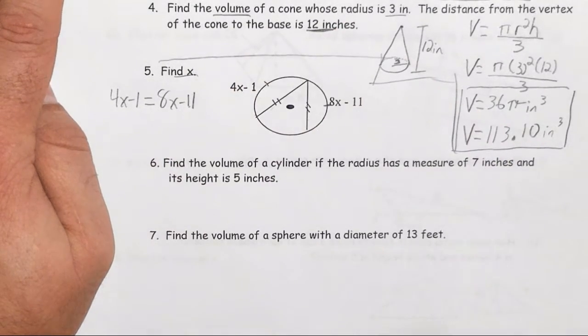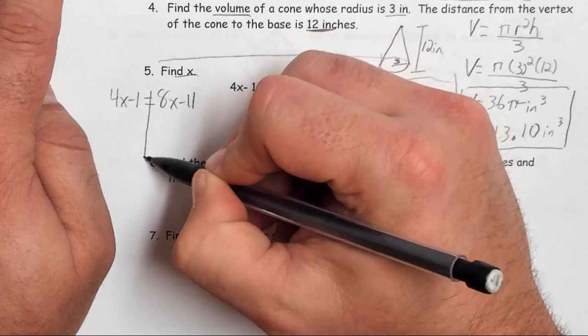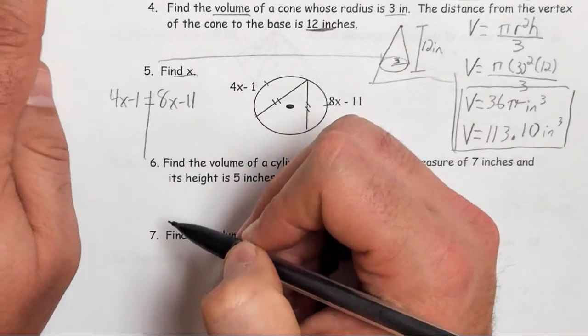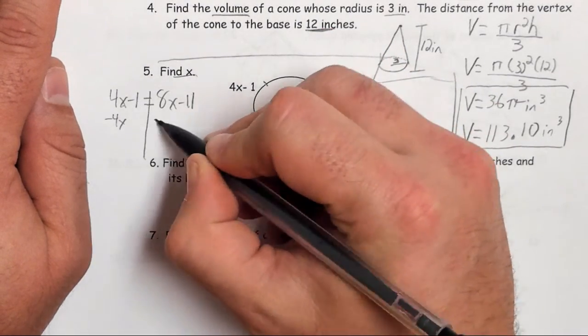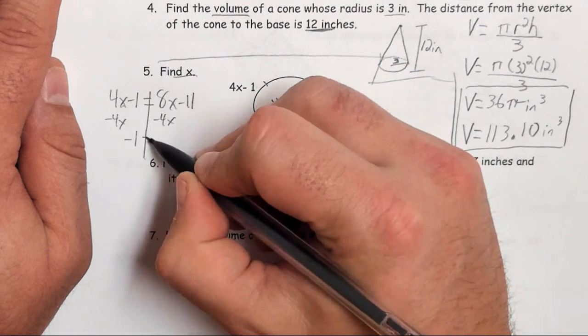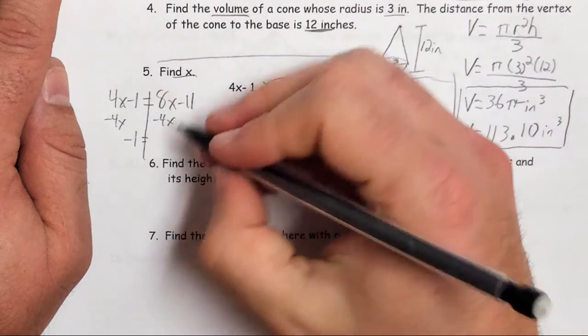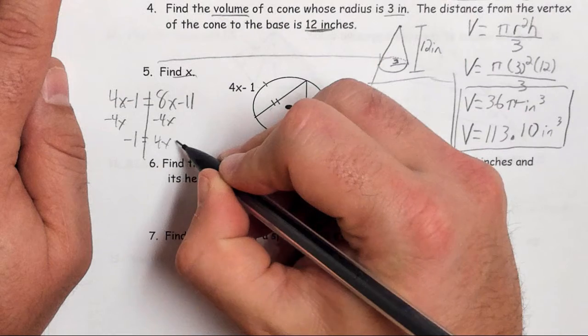Now the problem just centers around solving for x. First I'm going to move my x that is smaller, which is the 4x. Subtract that from both sides. It gives me negative 1 is equal to 4x minus 11.